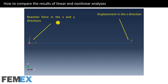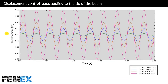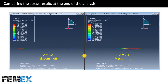I will use the reaction force in the X and Y directions and the displacement in the X direction to compare the results of linear and nonlinear analysis. Here I have plotted all four displacement-control loads — their frequency is the same but the amplitudes are different. The green curve has amplitude 0.01, the blue curve 0.05, the orange curve 0.1, and the pink curve 0.2.